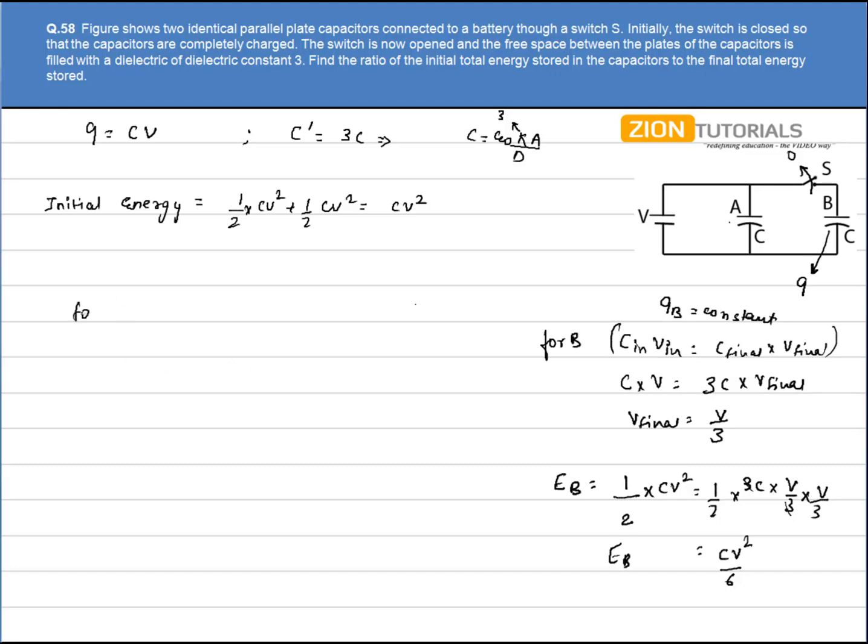Now for A, potential will be constant because earlier also it was connected to a battery of V volt, and now also it is connected to a battery of V volt. So Q initial by C initial will be equal to Q final divided by C final.